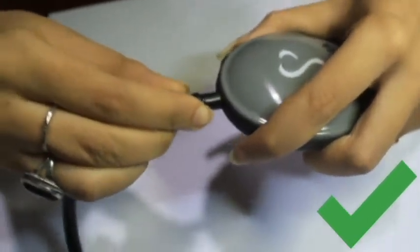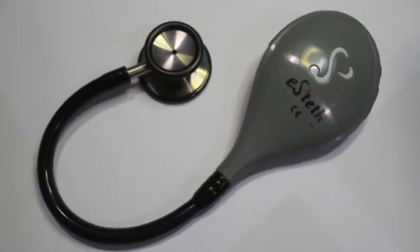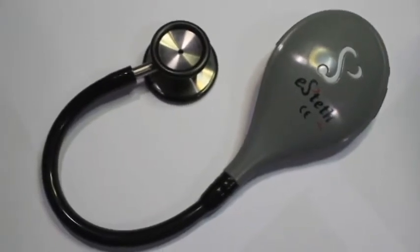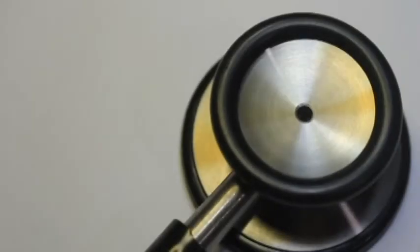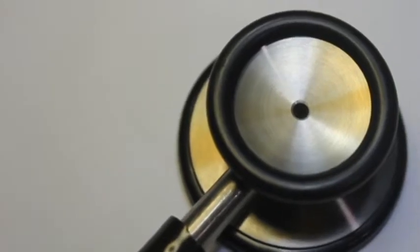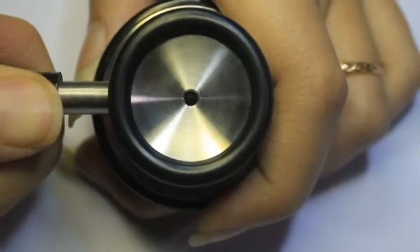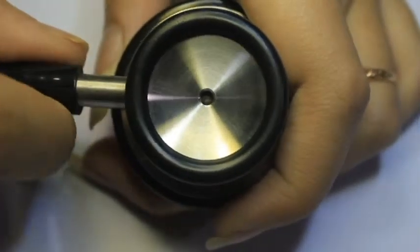Mistake number two is when you use the chest piece of the stethoscope without locking it. The correct way to get the maximum quality of sound is to hold the neck of the chest piece firmly and give it a slight twist.